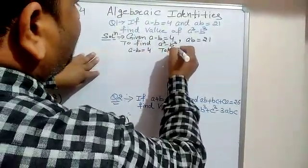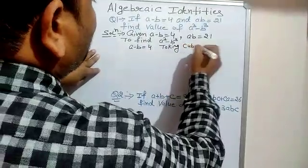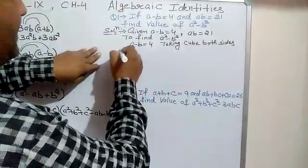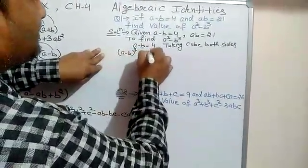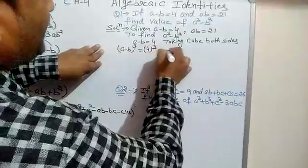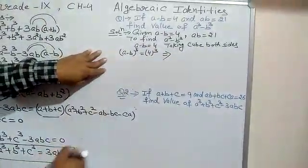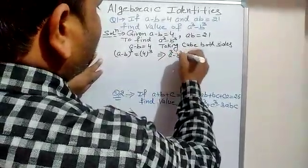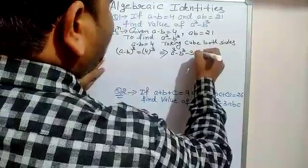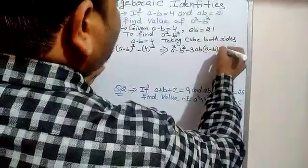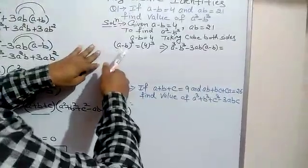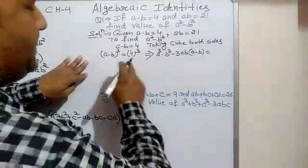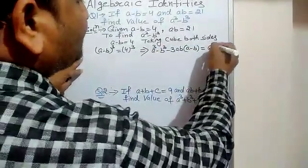Taking cube on both sides, a minus b whole cube equals 4 cube. Applying the identity: a minus b whole cube equals a cube minus b cube minus 3ab into a minus b. This further equals 4 cube, which is 64.